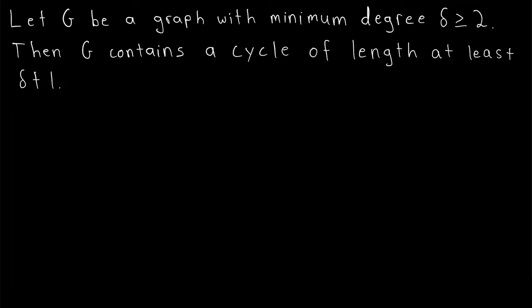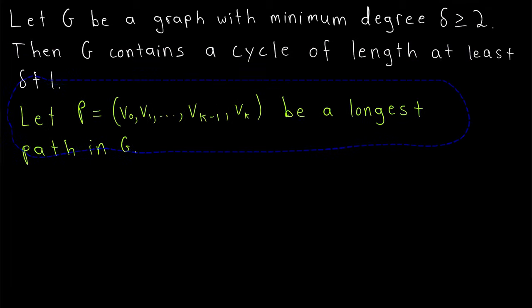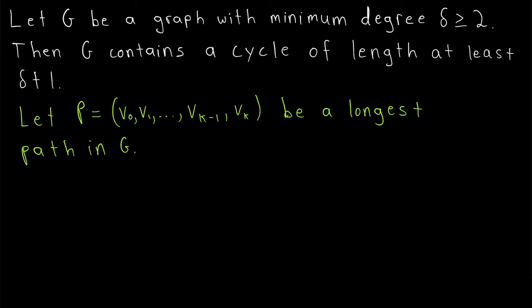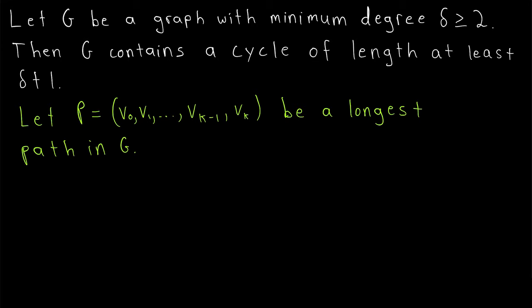Let's get into the proof. We'll begin by considering what is often a useful object in basic graph theory proofs: a longest path in our graph. So let P be a longest path in our graph G that has minimum degree at least 2. The path P consists of vertices v0, then v1, and so on, all the way up through vk minus 1 and some final vertex vk. What's useful about considering a longest path? Perhaps the most useful thing is the information we get about our last vertex vk.